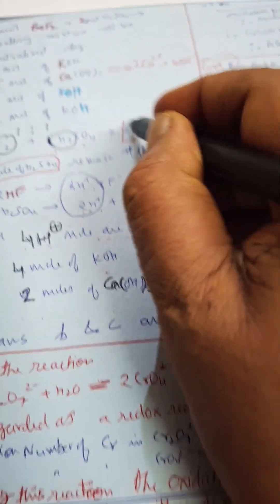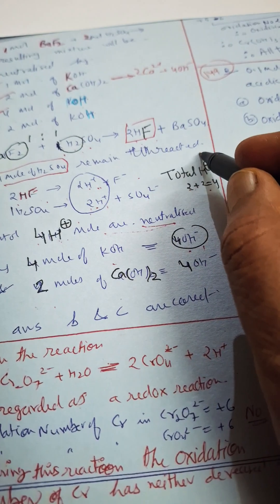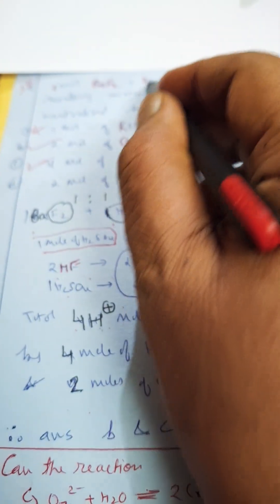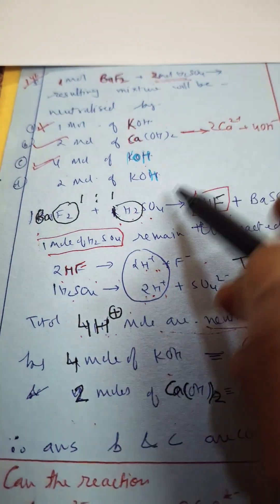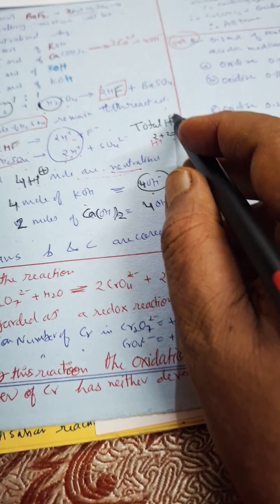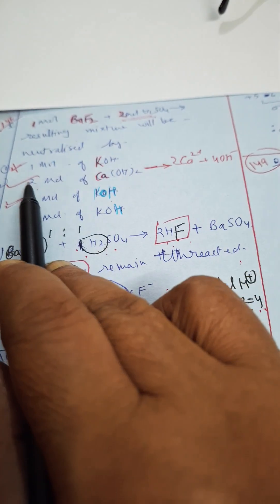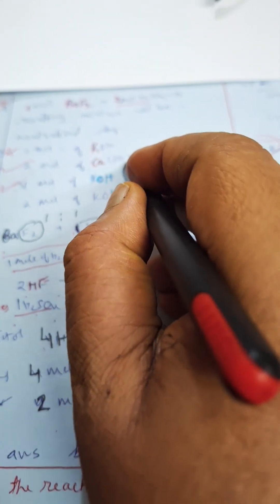Because one mole of BaF2 when it reacts with one mole of H2SO4 gives two moles of HF. Okay, so here from 2HF we are getting 2H+ and F-, which means two protons from HF. Now here they have given 2 moles of H2SO4 and only one mole of H2SO4 is consumed, one mole is left over. This is excess, okay? This is also releasing 2H+. Total H+ will be 4, so this 4H+ means neutralized by 4OH-, which we will get from 4 moles of KOH or 2 moles of calcium hydroxide.